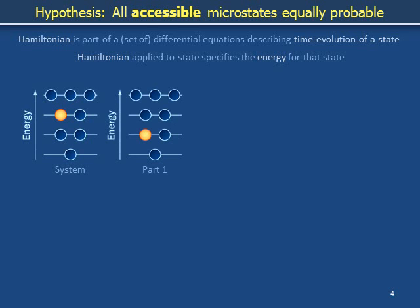This is an example of the state of a world with two pieces. The piece on the left is called the system, and the piece on the right is called part 1, for reasons that will be clear later on.